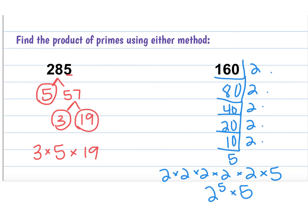So again, you get to choose which method makes more sense to you. I will say that the divide by primes method comes in handy for greatest common factor, so at least be comfortable enough to use it. But really whichever one you prefer — you will see me most often using the tree diagram.